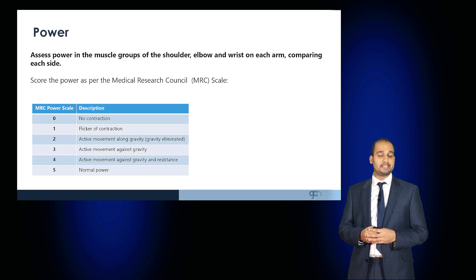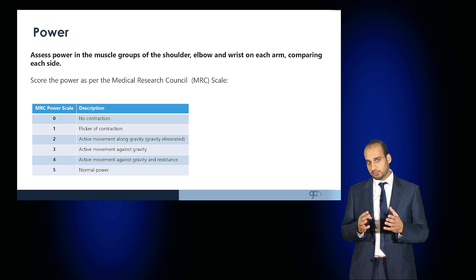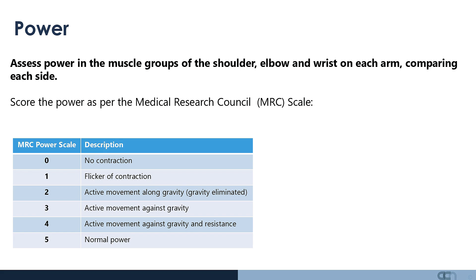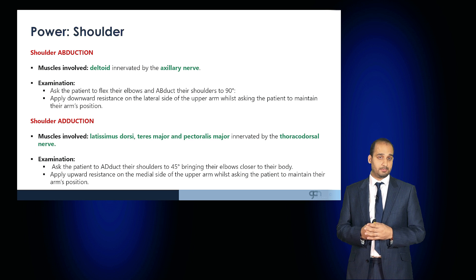Power should be assessed in the muscle groups, comparing each side. Power is scored according to the Medical Research Council scale, on a scale of 0 to 5. A power of 0 indicates no contraction; 1 is a flicker of contraction; 2 is active movement along gravity; 3 is active movement against gravity; 4 is active movement against gravity and resistance; and 5 is normal power. Examine power in all of the muscle groups.